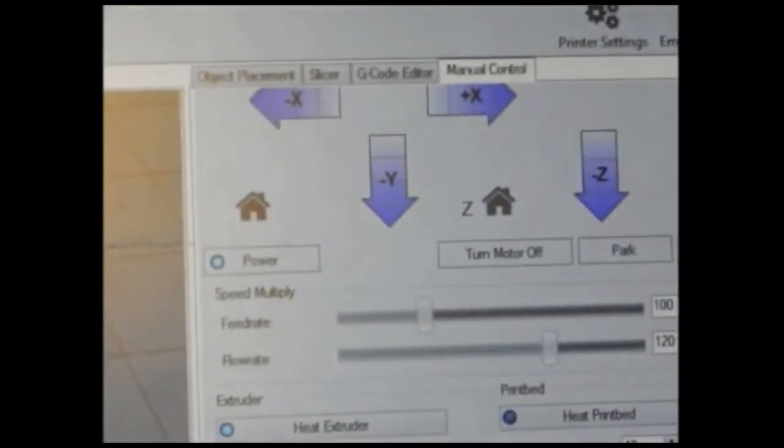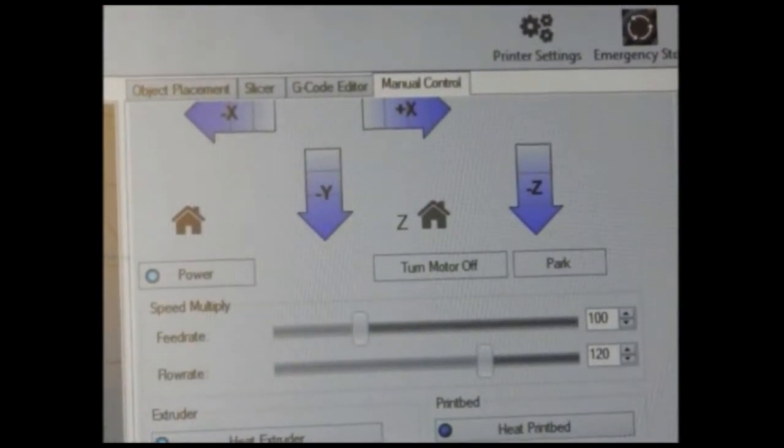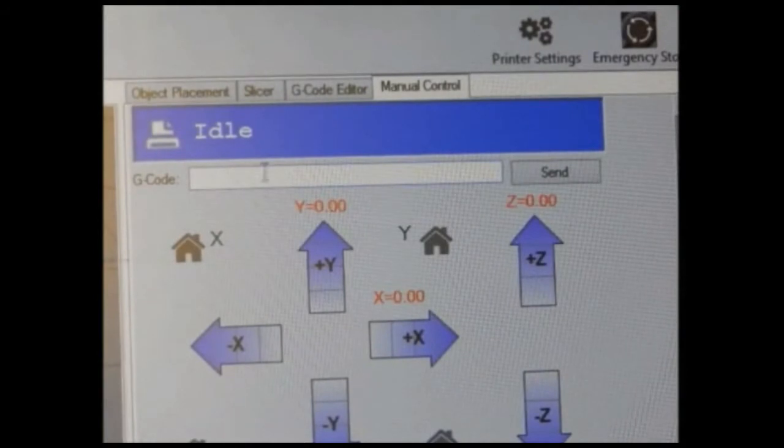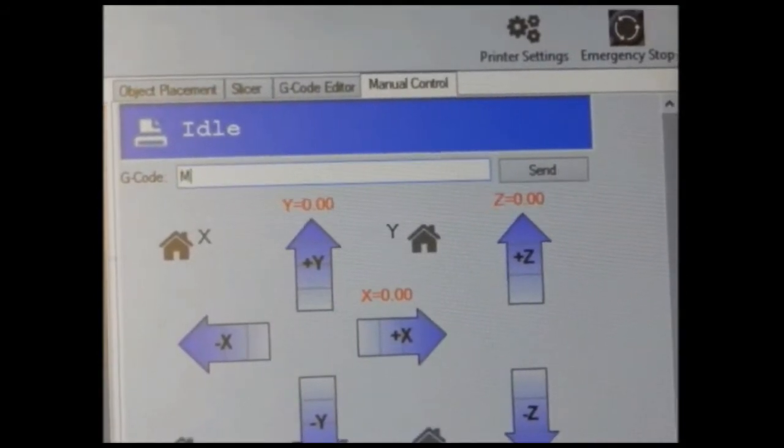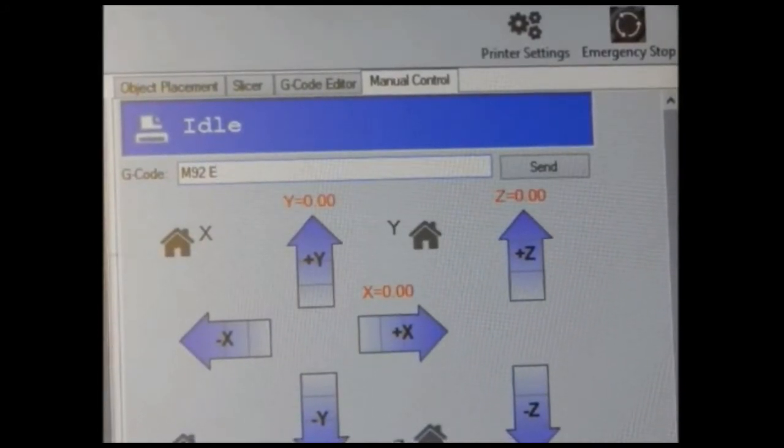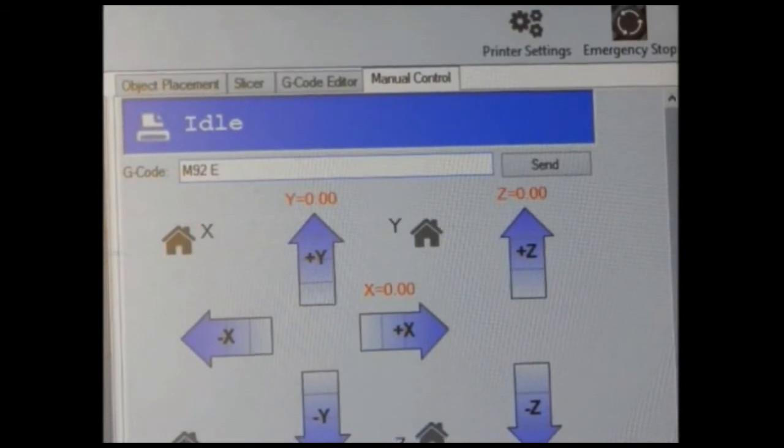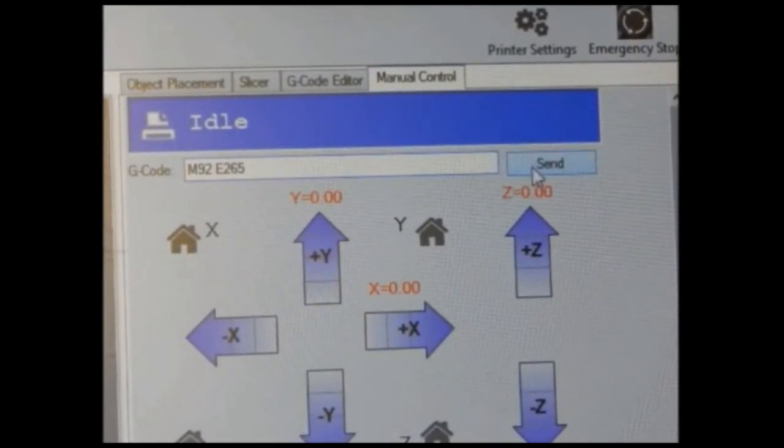To change this, you don't have to go to Marlin or Arduino IDE again. Just use your Repetier Host manual control page. And in this G-code column, enter M92 space E and our new E-step value. Let's keep it at 265 and click send.